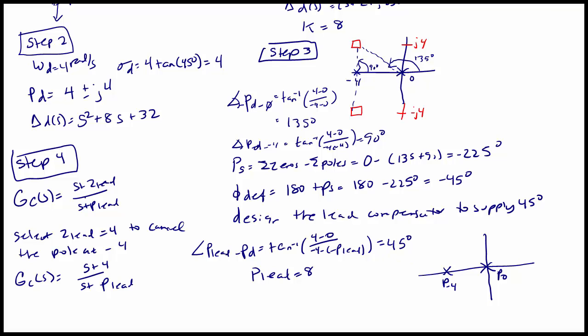And now we have our compensator that has a pole out here at negative 8 and a 0 at negative 4. And we show the desired pole, PD at negative 4 plus J4 and negative 4 minus J4. So we have P lead here and Z lead here.